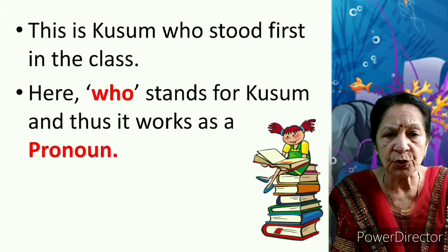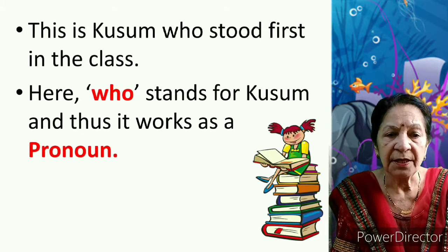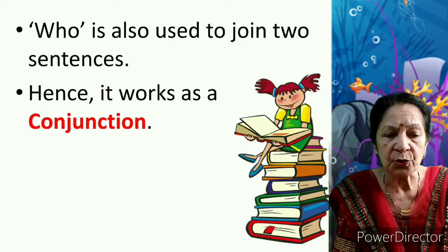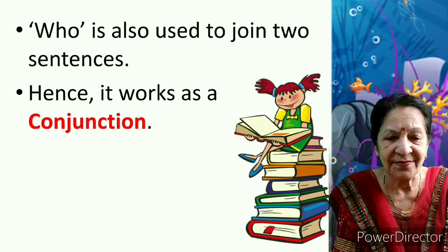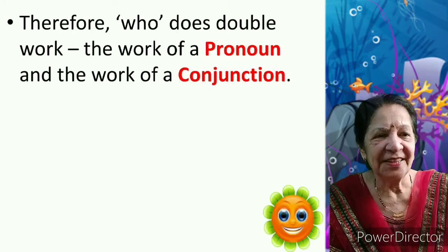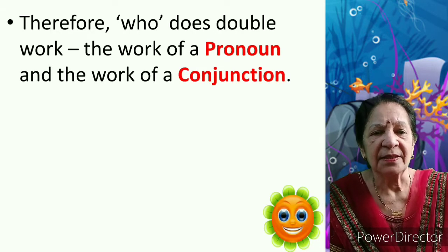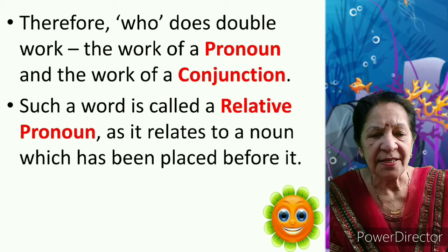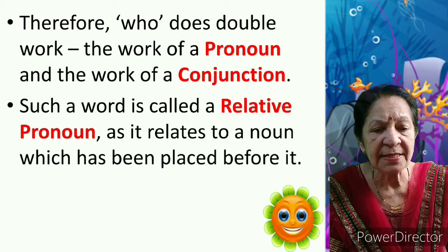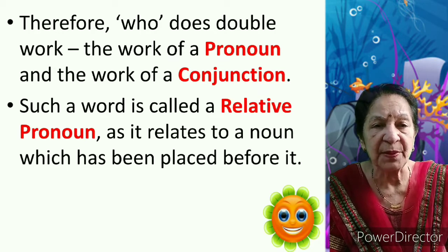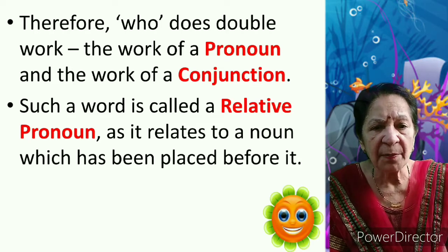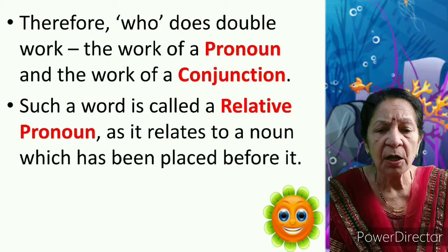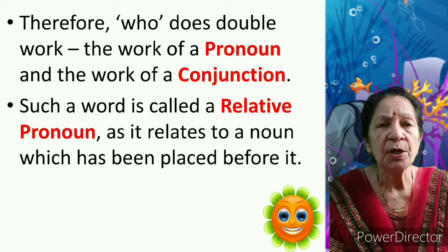For example: 'This is Kusum who stood first in the class.' Here, 'who' stands for Kusum and thus works as a pronoun. Who is also used to join two sentences, so it works as a conjunction. Therefore, 'who' does double work — the work of a pronoun and the work of a conjunction. Such a word is called a relative pronoun, as it relates to a noun placed before it. So in this sentence, 'who' is being used as both a pronoun and a conjunction, making it a relative pronoun.